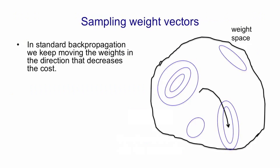So here's a picture of what happens in standard backpropagation. On the right, I've drawn the weight space, which of course is very high dimensional and unbounded. And this is a very bad picture of it, but it's the best I can do.